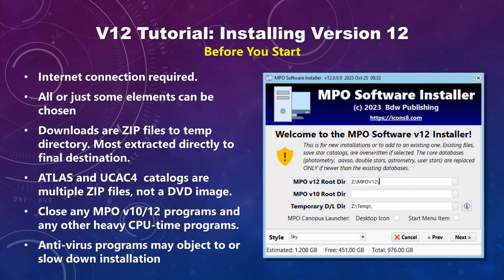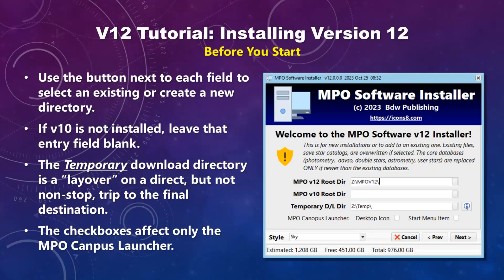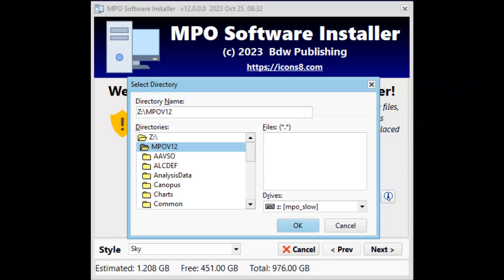Be sure to close any running version 10 or 12 programs. This should not include the MPO server application in version 10, but if you get error messages about trying to copy files to the MPO version 10 directories, stop the server and try again. If you have version 10 installed, do not install version 12 as a subdirectory of the version 10 directory.